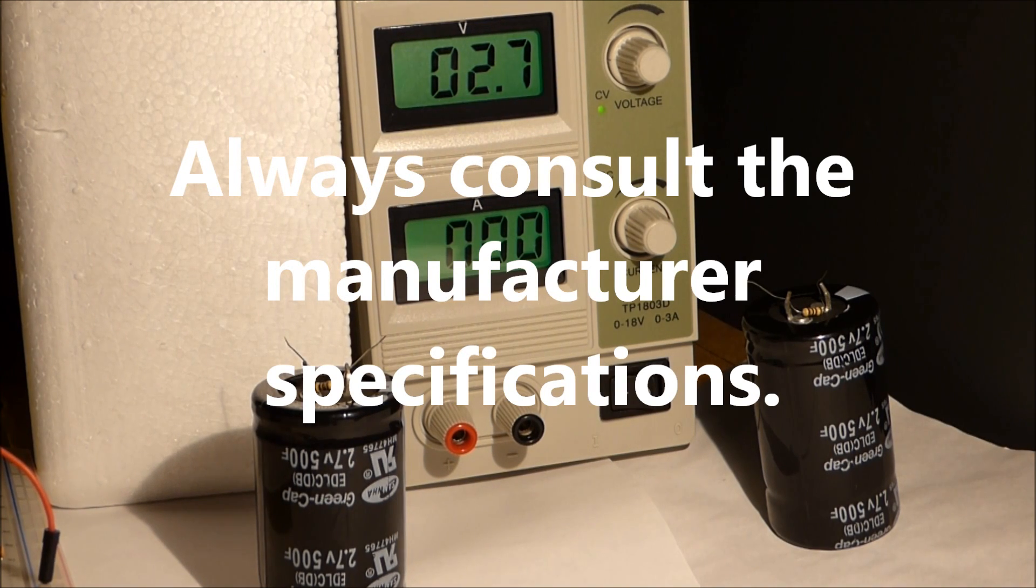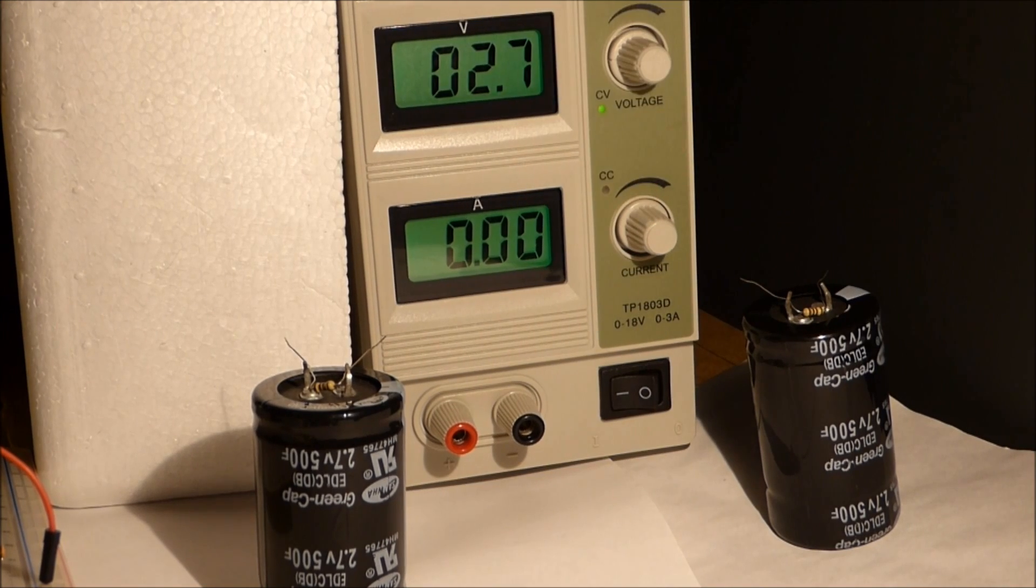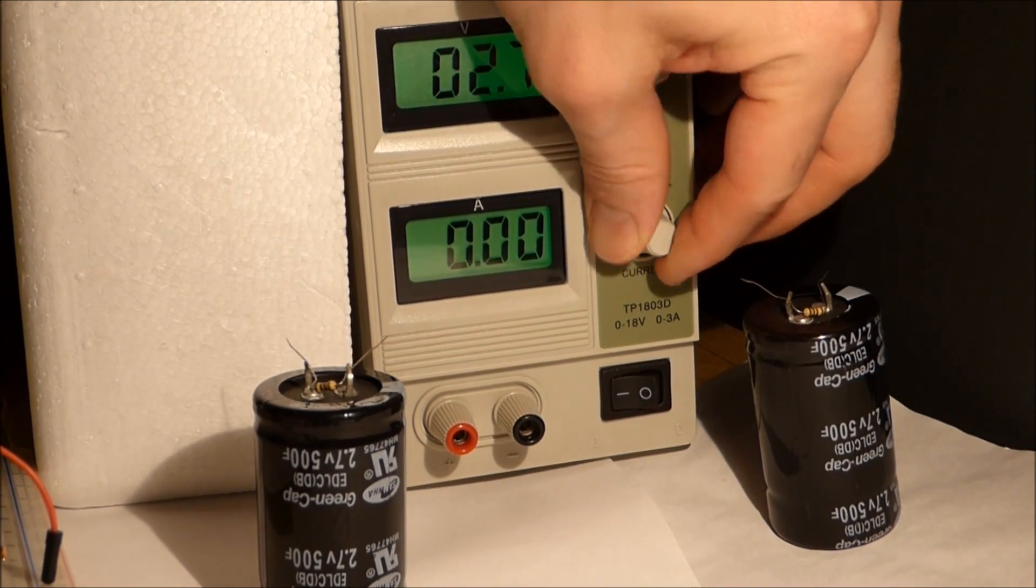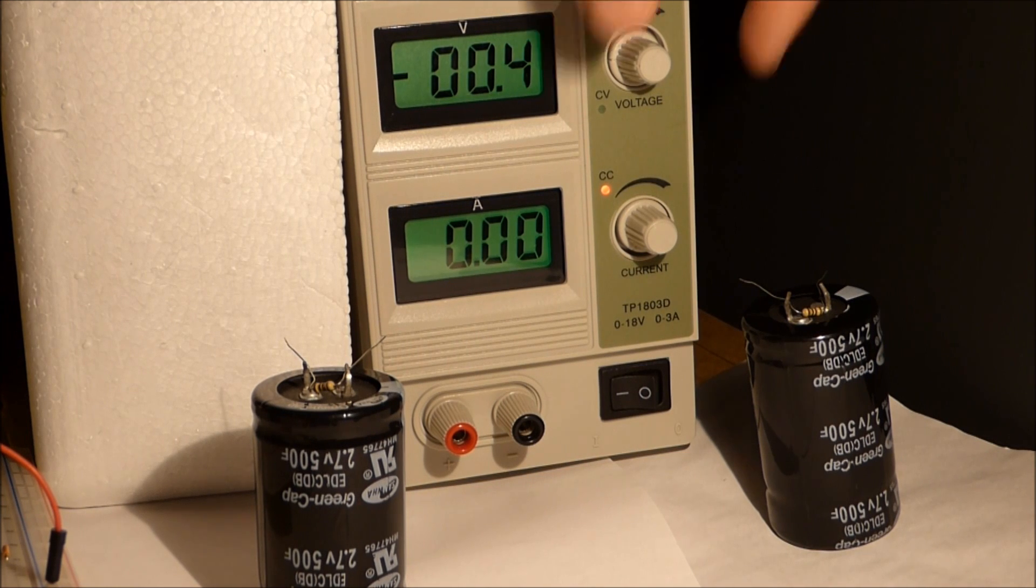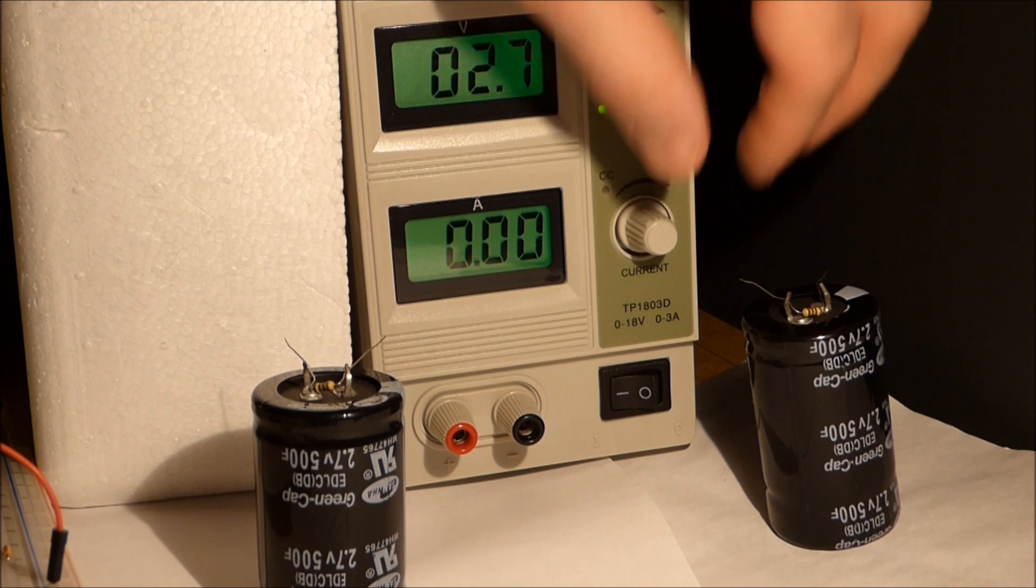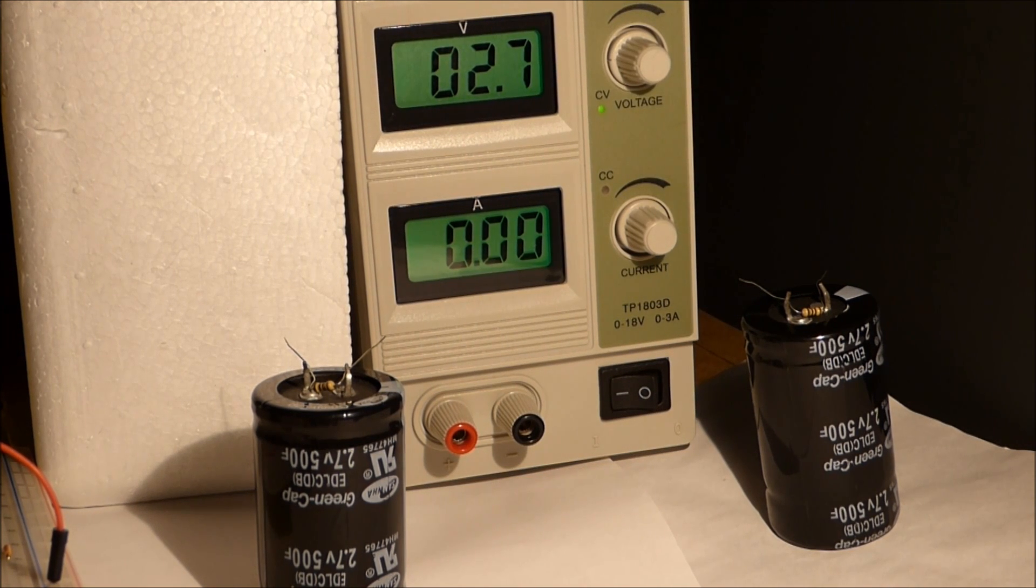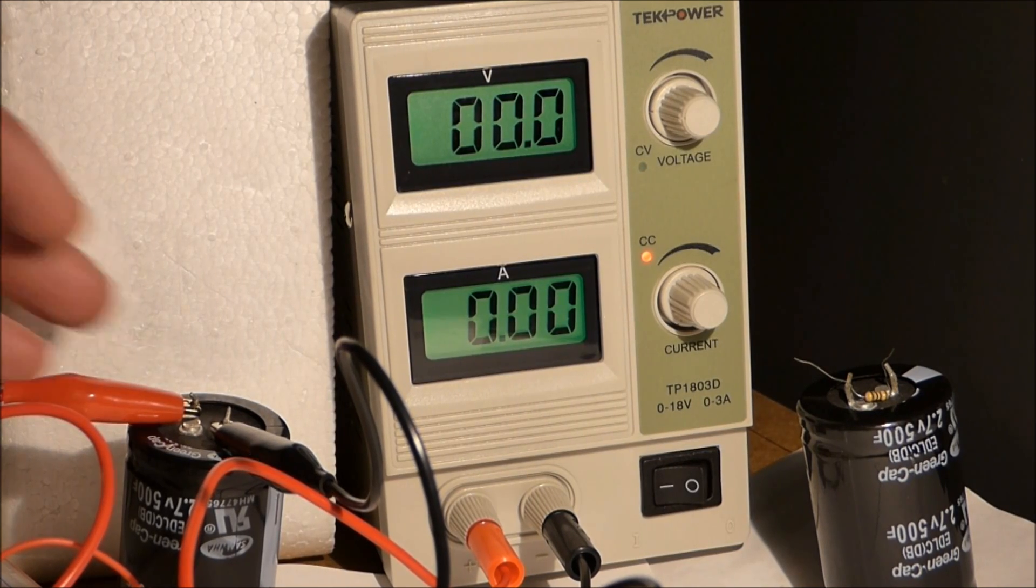With this meter to adjust the voltage, I turned the current all the way up. When it's all the way down, that voltage doesn't show up, so with this particular meter you have to turn it up. This is the most economical one I could find that looked decent.